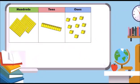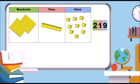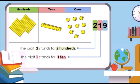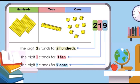Look at the place value chart again. We have two hundreds, one ten, nine ones. Two hundreds, one ten, and nine ones make two hundred and nineteen. The digit 2 stands for two hundreds. The digit 1 stands for one ten. The digit 9 stands for nine ones.